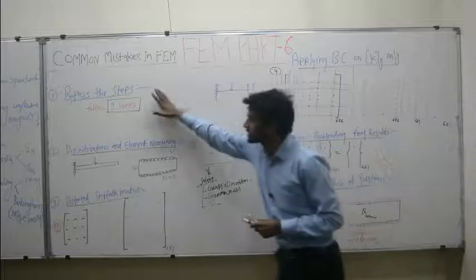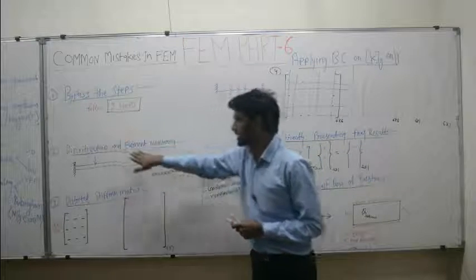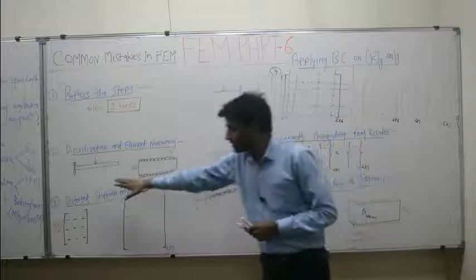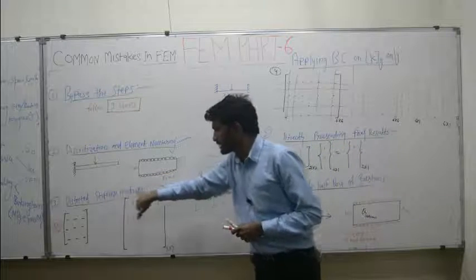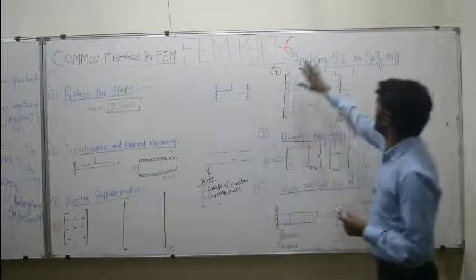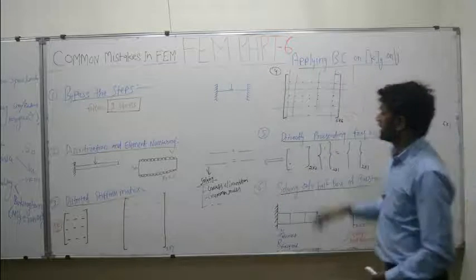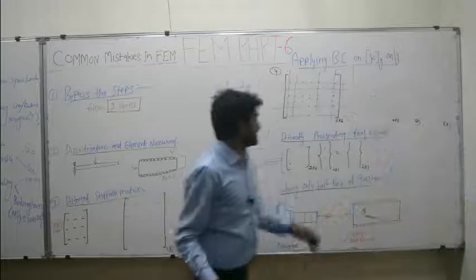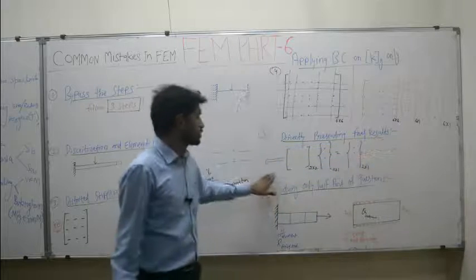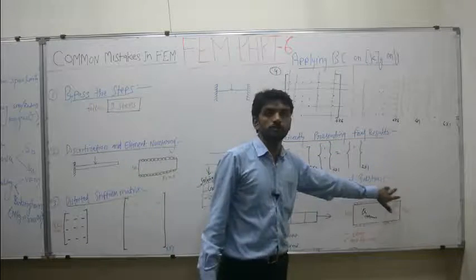The 6 mistakes are: number 1, bypassing the step; number 2, discretization and element numbering error; number 3, distorted stiffness matrix error; number 4, applying boundary condition on KG only; number 5, directly presenting the final results; and number 6, solving only the half part of the question.